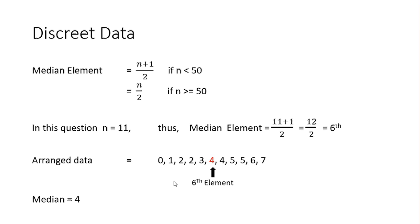So here we have 0, 1, 2, 1, 2, 3, 4, 5, 6 — and the sixth element in the data set, once arranged in order, is 4. Therefore the median of this data set is equal to 4. Here we looked at a question where the number of data points is an odd number.